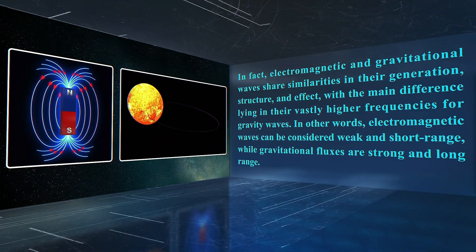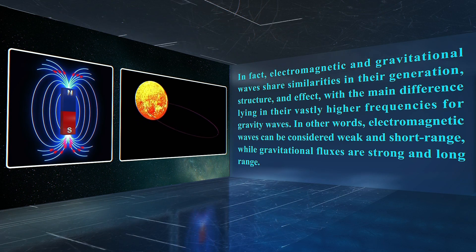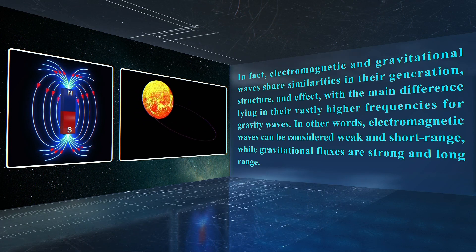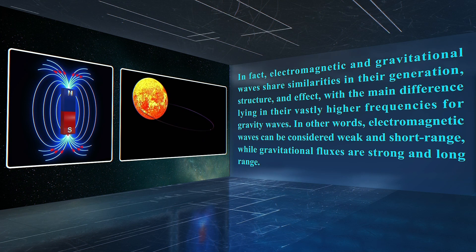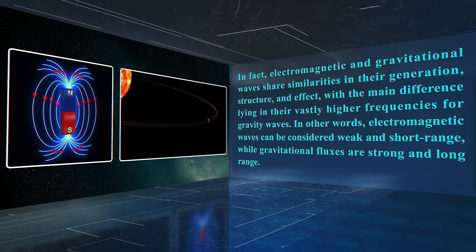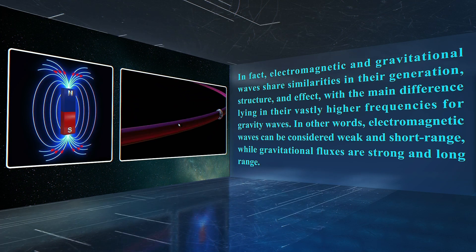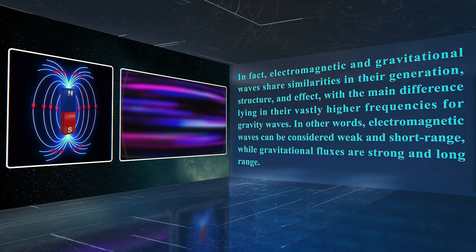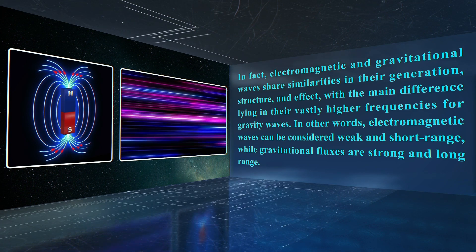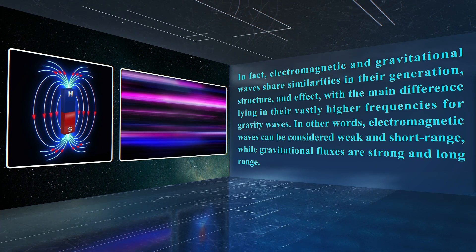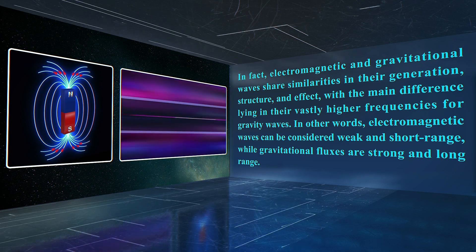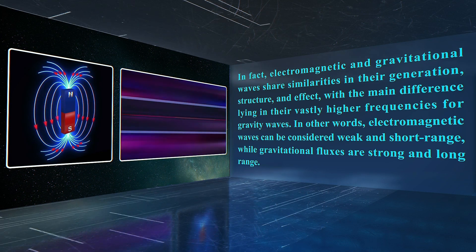In fact, electromagnetic and gravitational waves share similarities in their generation, structure, and effect, with the main difference lying in their vastly higher frequencies. In other words, electromagnetic waves can be considered weak and short-range, while gravitational fluxes are strong and long-range.